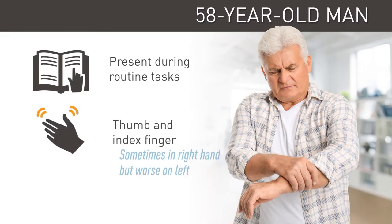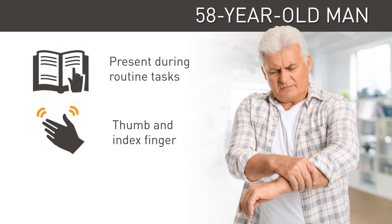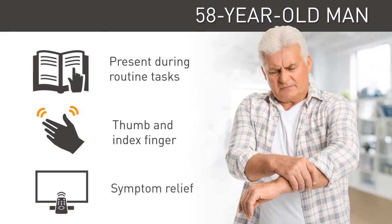He states it sometimes occurs in the right hand, but is clearly worse on the left. When asked if anything helps alleviate his symptoms, he remembers that using the remote or doing crosswords in bed stops the shaking. How would you differentiate his tremor as Parkinsonian Tremor from Essential Tremor?